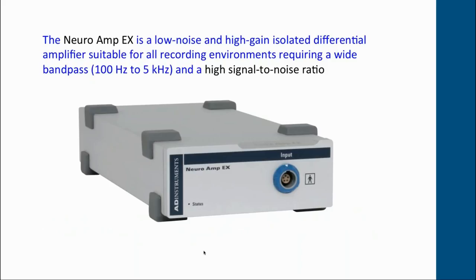I'll be talking about the NeuroAmpX. Many of you, if you're currently performing microneurography, will be used to the Iowa system — the Iowa amplifier, which is based on the original amplifier developed in Uppsala by Kalerici Hagbarth and his colleagues. This is the same amplifier that I trained on with David Burke in Sydney. The NeuroAmpX is a new type of amplifier; I was involved as a consultant providing system specs and testing all the prototypes. It is a very good low-noise amplifier with a wide bandpass of 100 Hz to 5 kHz and, importantly, a high signal-to-noise ratio.